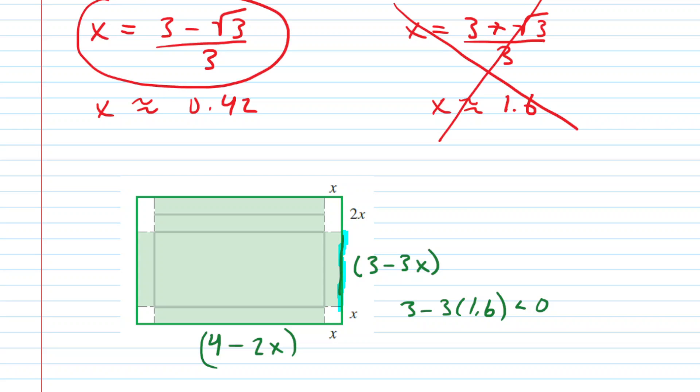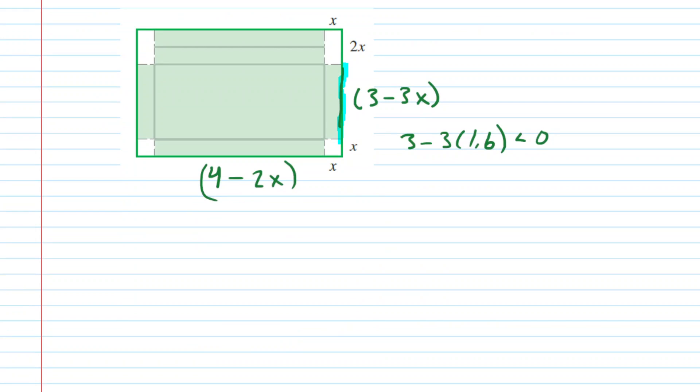So let's reject the answer with 3 plus root 3 over 3 and accept this as our only answer. But we still have to prove that 3 minus root 3 divided by 3 maximizes the volume. And to do that we might talk a little bit more about the restrictions on x. Now of course we know that x has to be greater than or equal to 0. Otherwise there would be no box if we made x less than 0. We just can't have a negative height for our box.